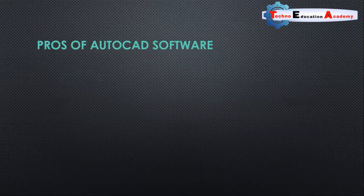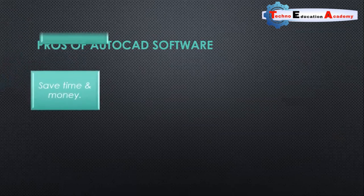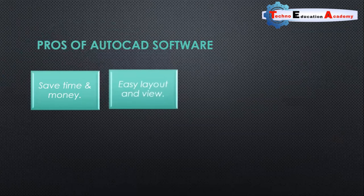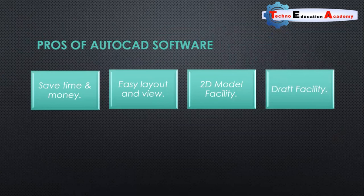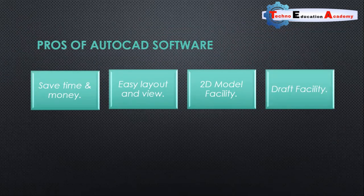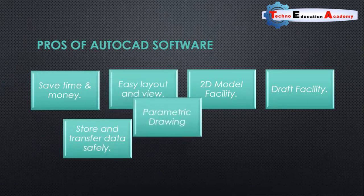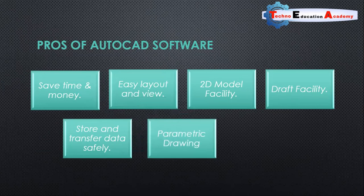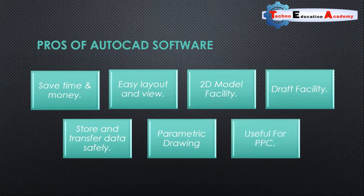The main advantages of AutoCAD include: it saves time and money; easy layout and view; 2D model facility — you can make 2D drawings from 3D models; draft facility to convert 3D parts into 2D models; safe storage and transfer of data; parametric drawing; and it is useful for production planning and controlling in manufacturing.